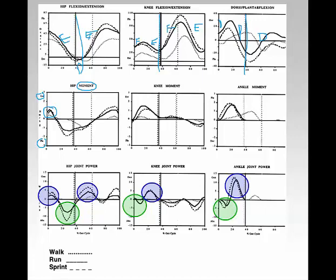This is extension, and this is flexion for limb advancement. So if you have an extensor torque and you are extending, that is a concentric contraction, so you are generating power.